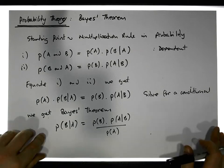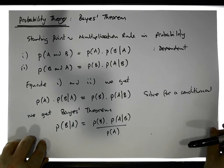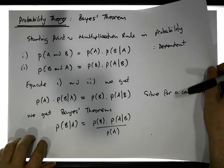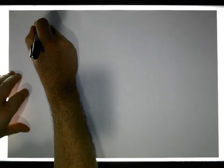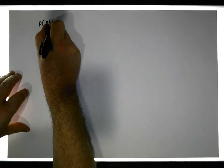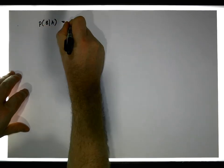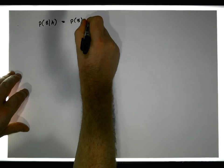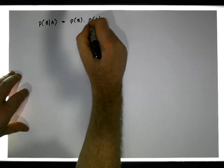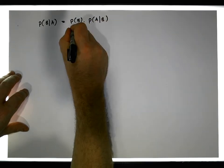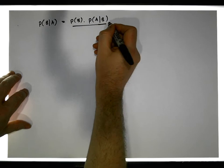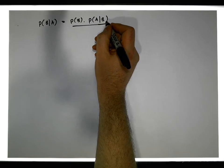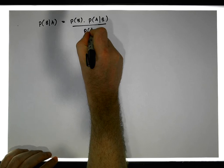This is a little bit abstract, so let me put it into something we can recognize from a real world situation. Restating Bayes' theorem: the probability of B given A equals the probability of B times the probability of A given B, divided by the probability of A.